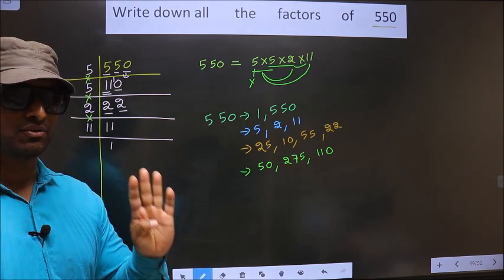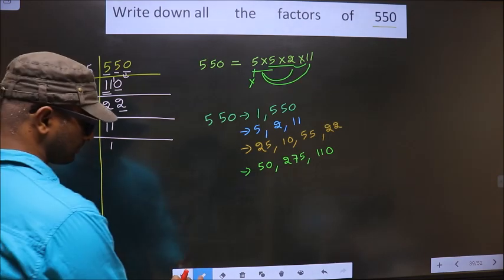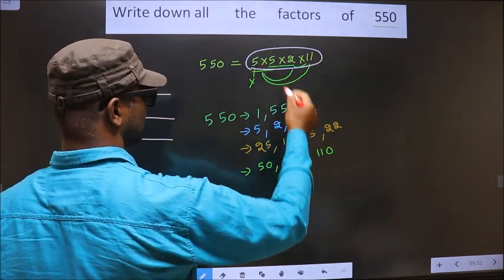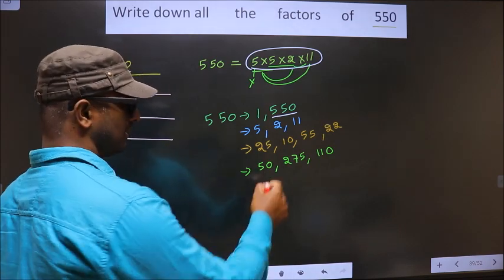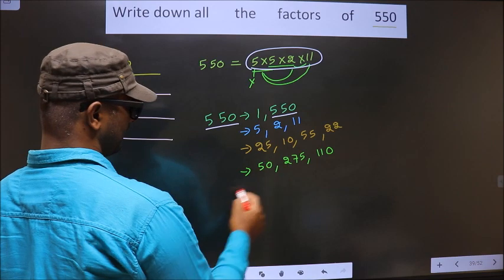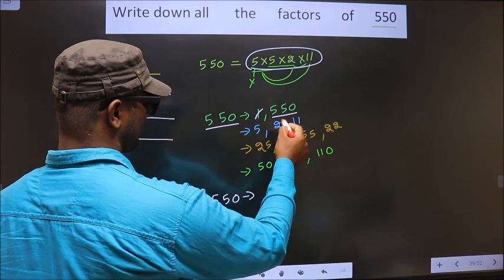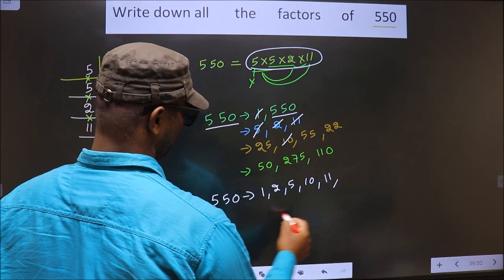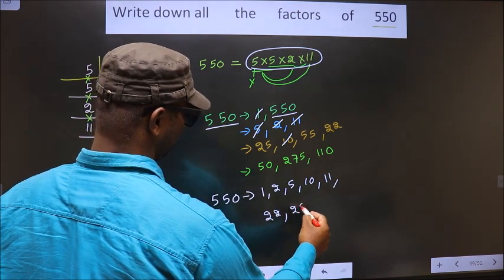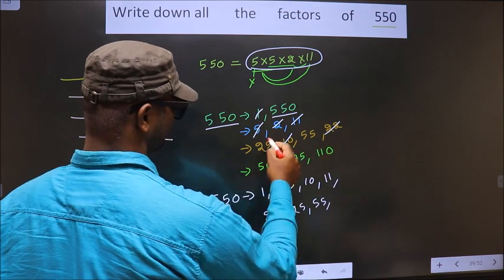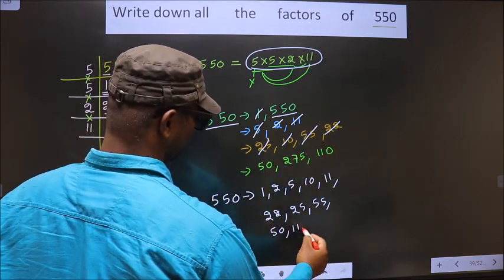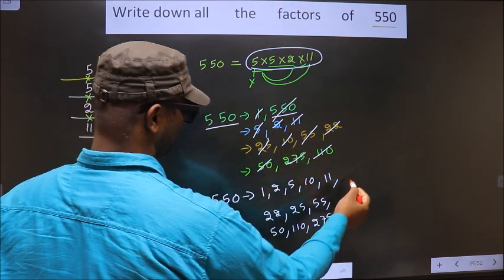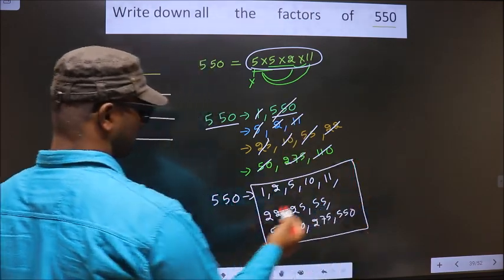Now you take the combination of 4 numbers. Here we have only 4 numbers. If we take all the 4 numbers we get 550 itself. Thus these are all the factors of 550: 1, 2, 5, 10, 11, 22, 25, 55, 50, 110, 275, and 550.